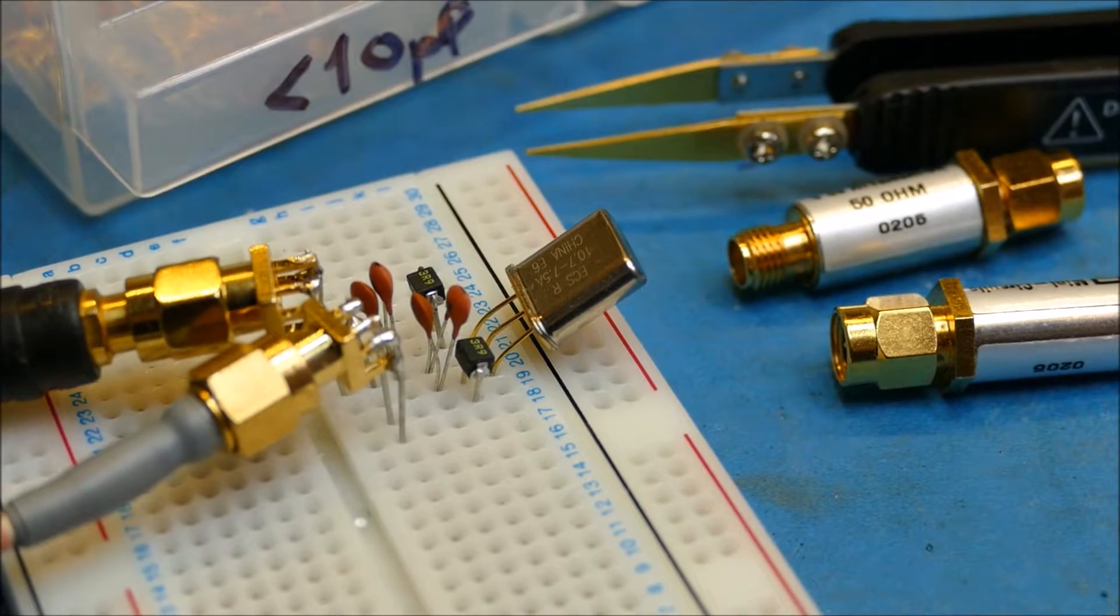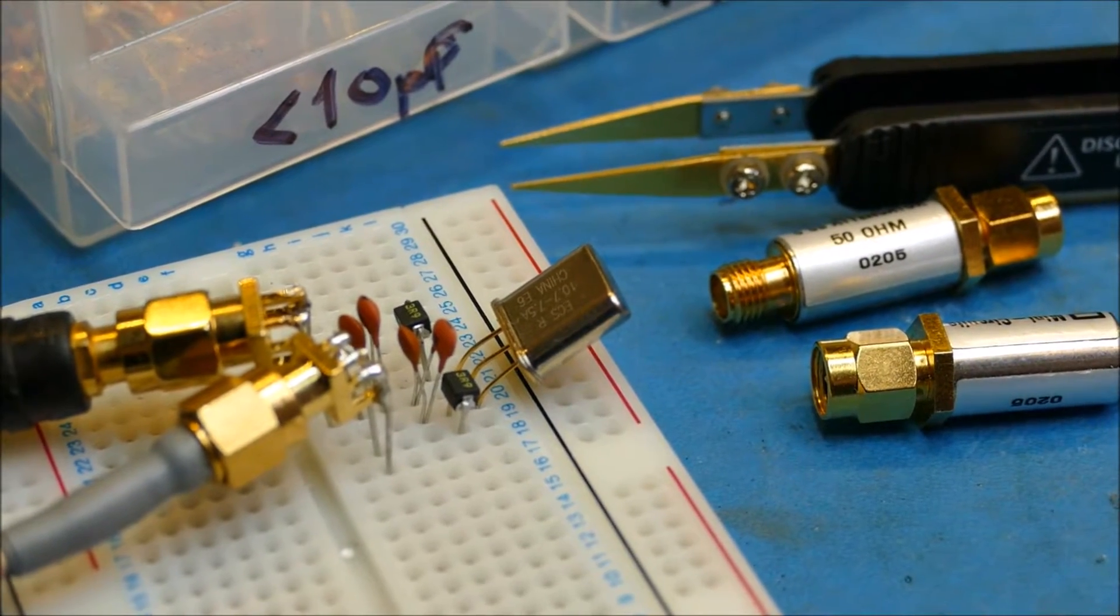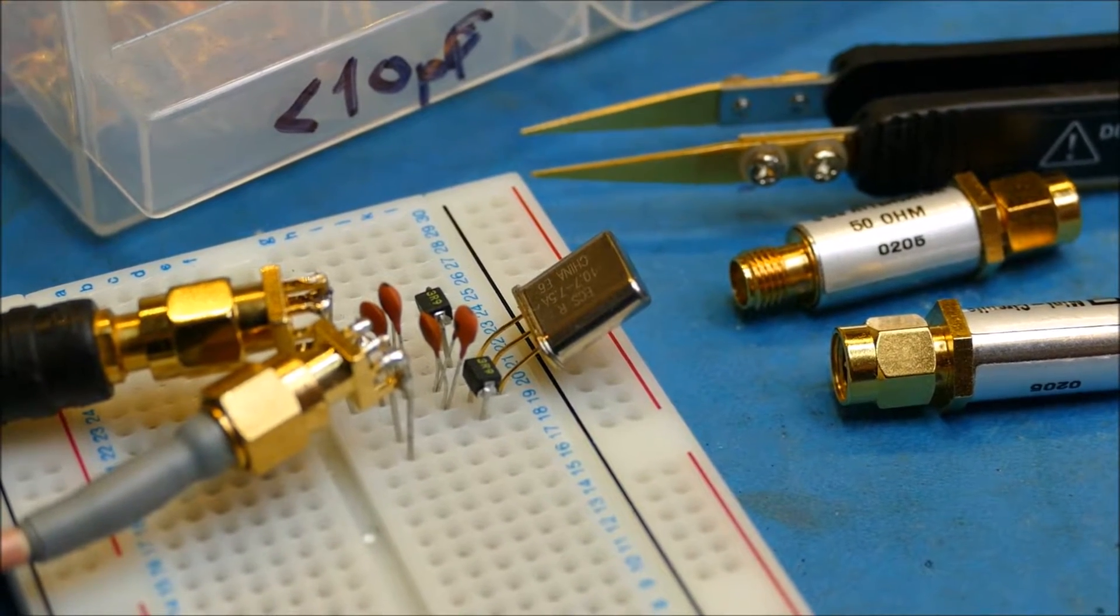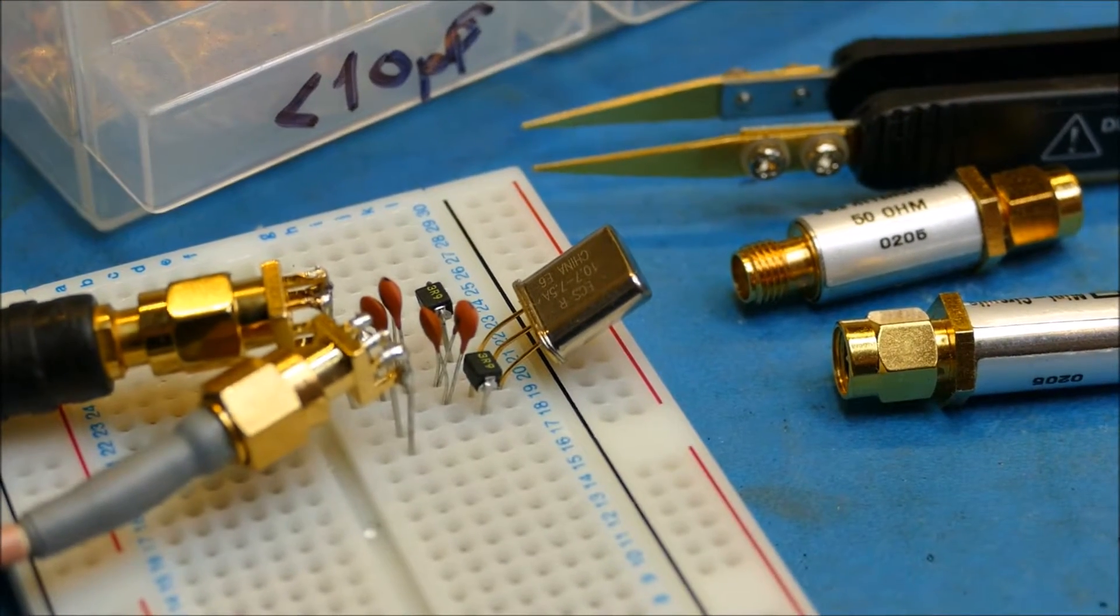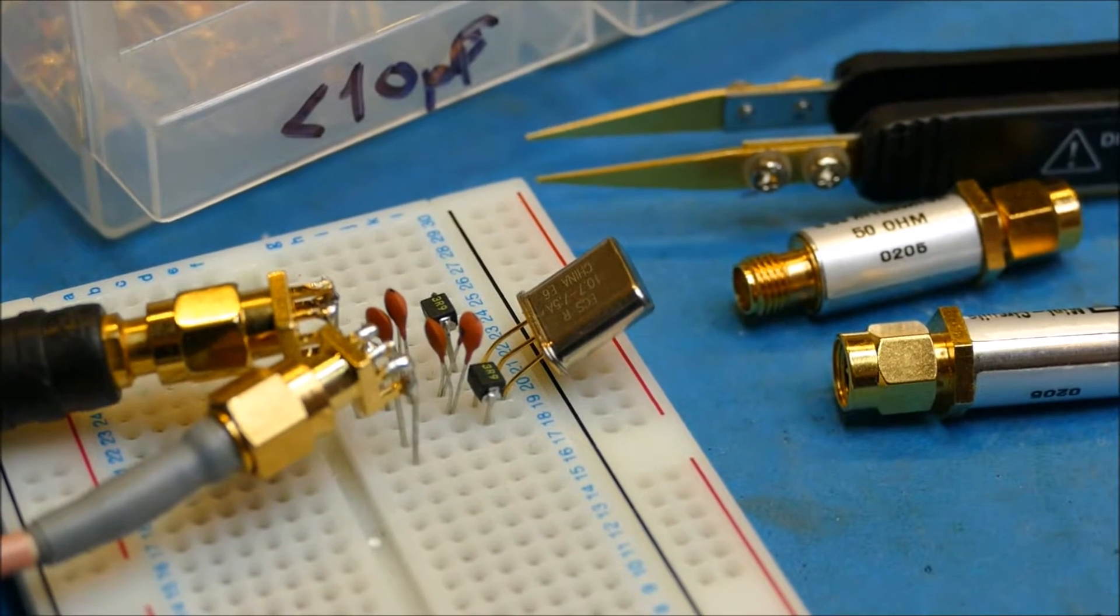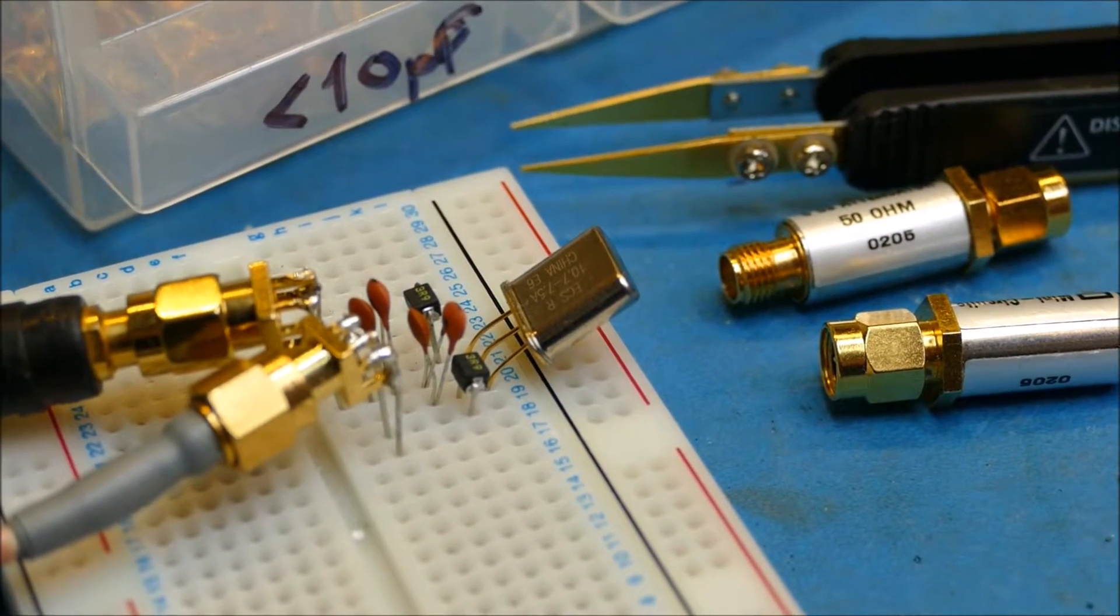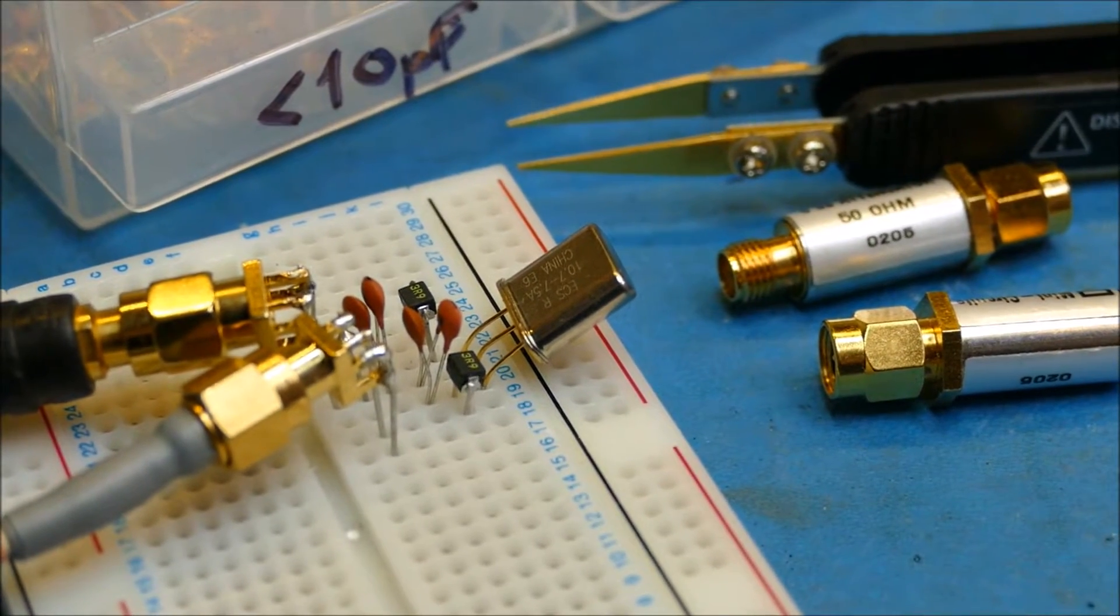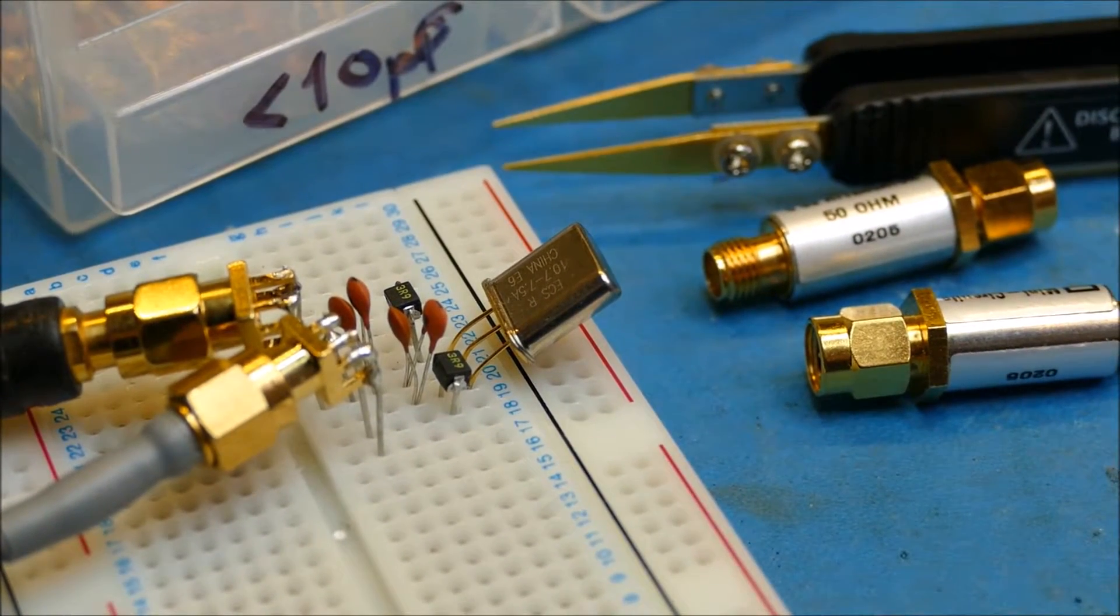What I found was I had to have a little bit more parallel capacitance onto the filter to make it match closer to 50 ohm - just another three picofarad in parallel on the input and output of the filter.